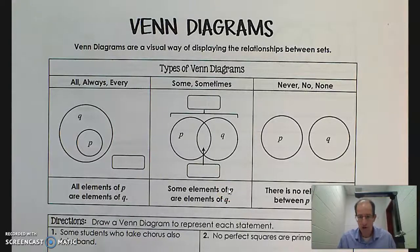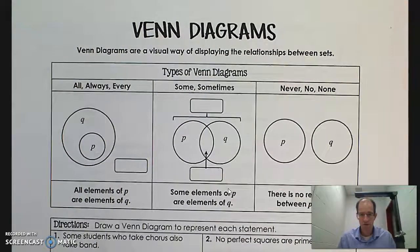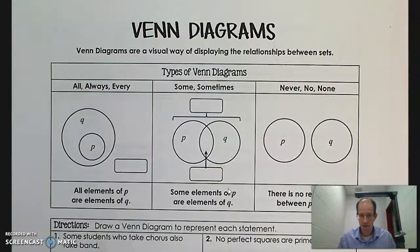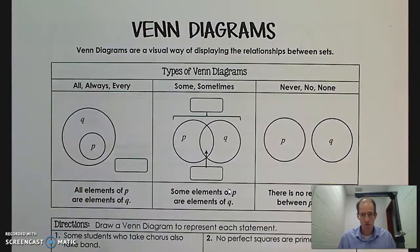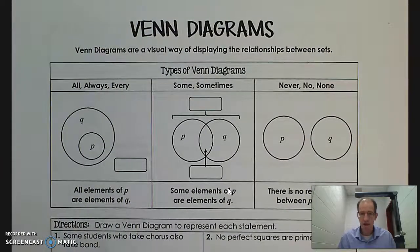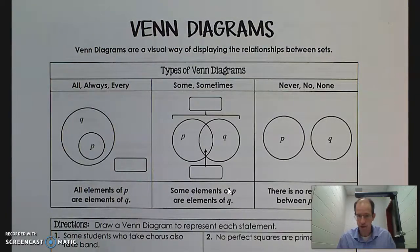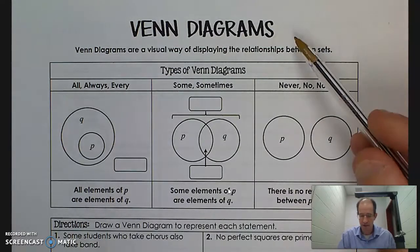Hi. In this video, I'll be going over pages 3 and 4 of Work Packet 2.2. We've been talking about conjectures, compound statements, and conditional statements. We've seen truth tables, and now we're going to see another tool to help us visualize and better understand the relationship between different statements. So we're going to talk about Venn diagrams.